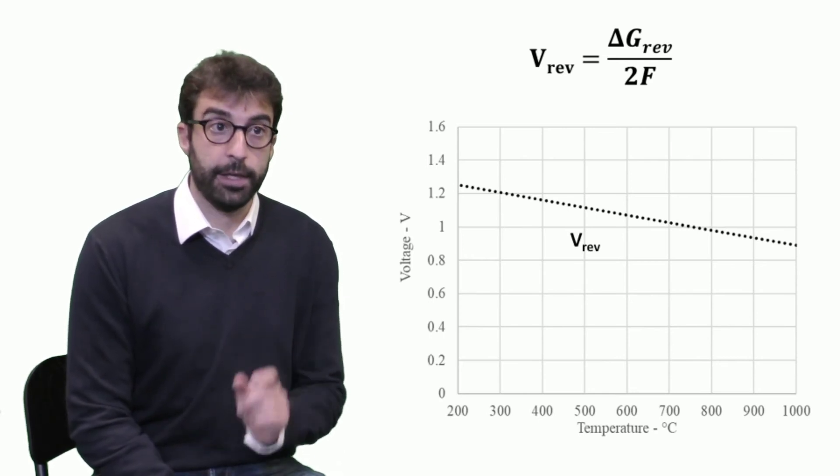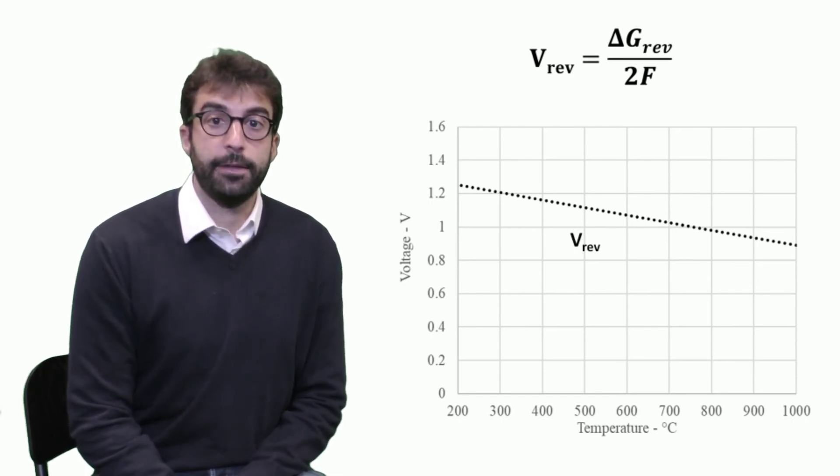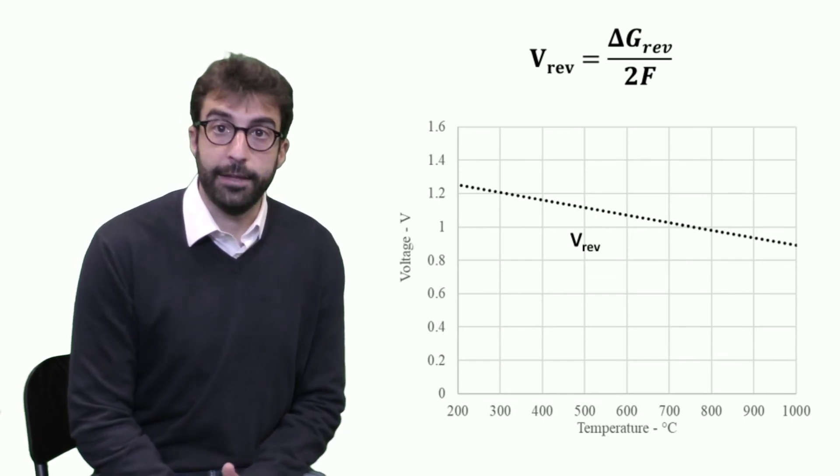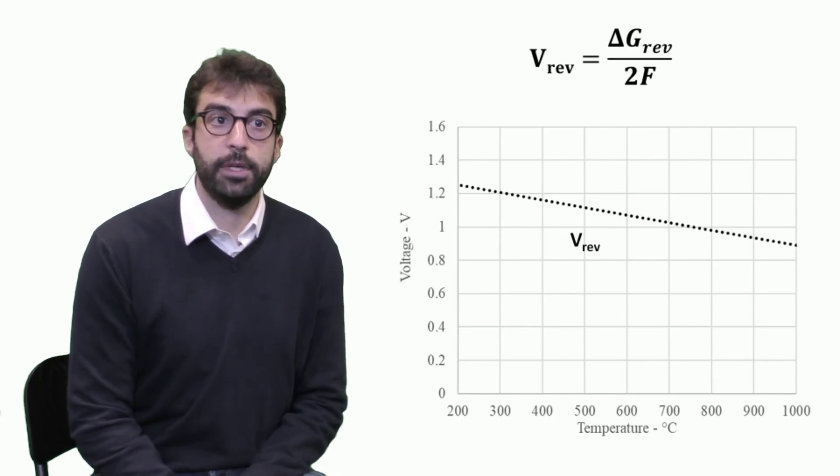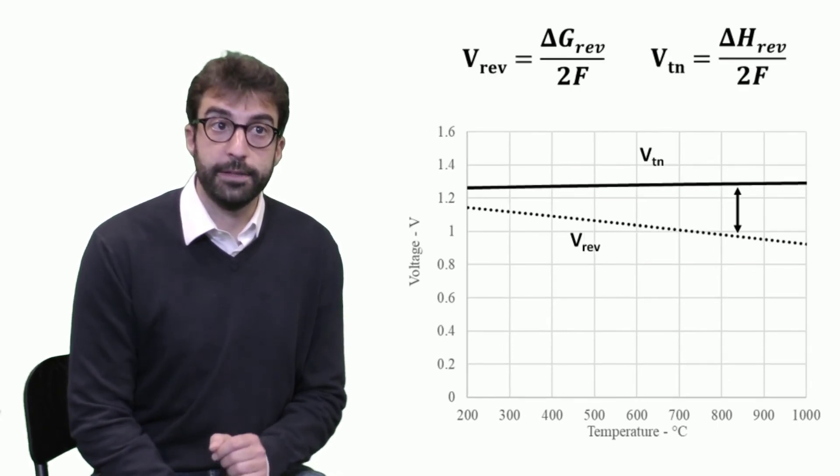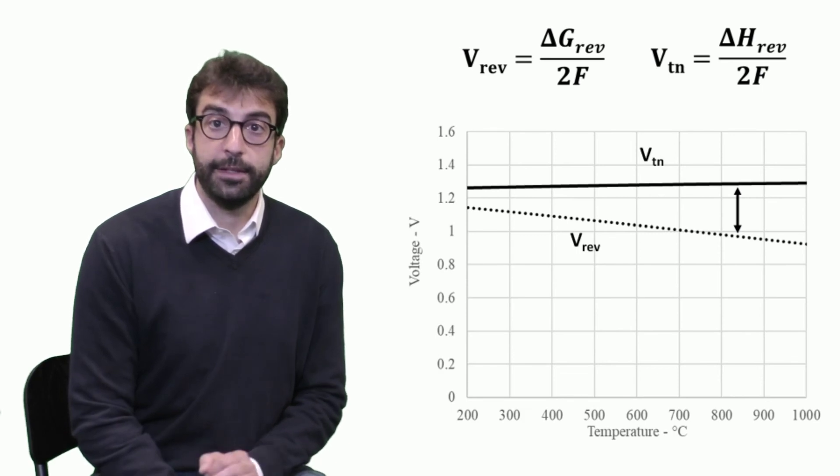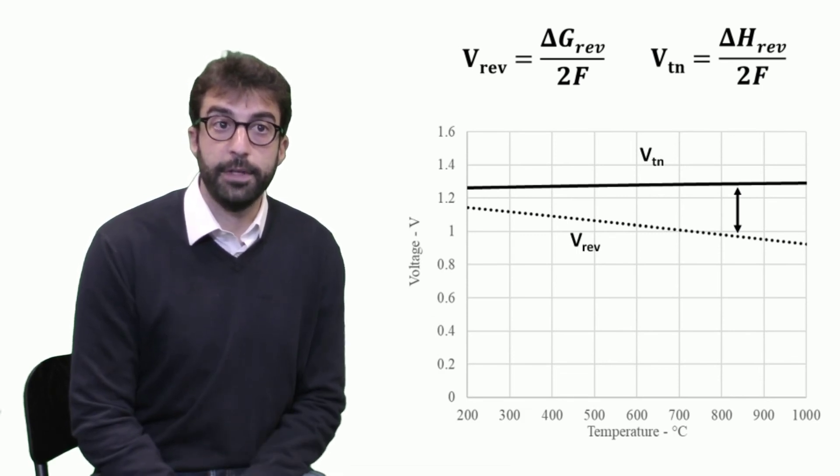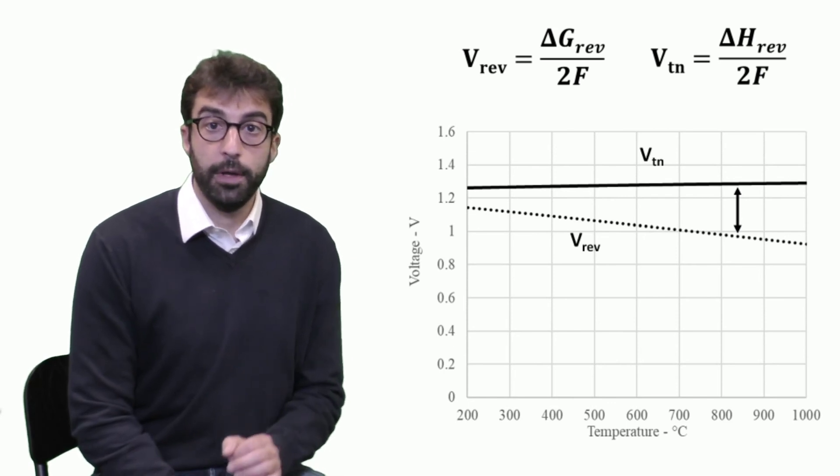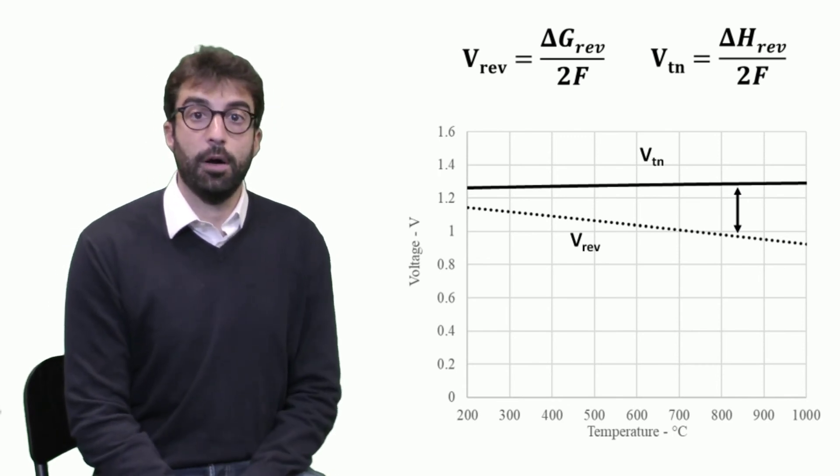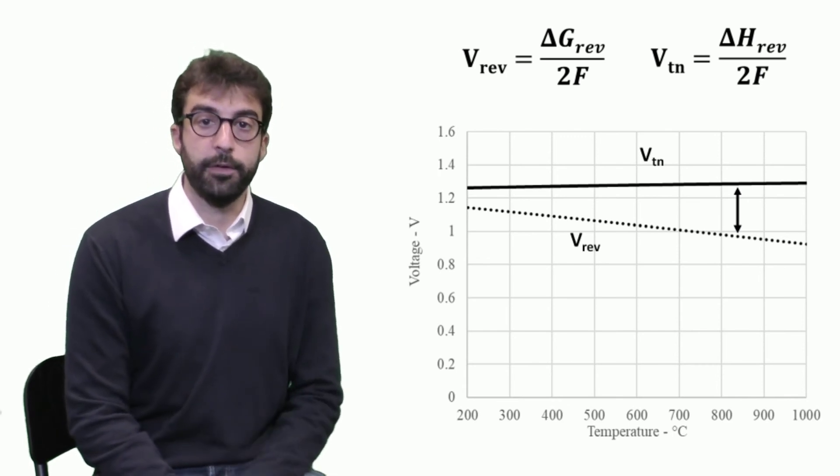So we can plot voltage like in this example as function of temperature. And we can do at the same way a similar exercise also for the total enthalpy. This is called thermoneutral voltage. We'll see in the next unit what it means, but you can see it's possible to define it the same way as the ratio between the total enthalpy difference and the two times Faraday. So we can plot both the variation as function of temperature of thermoneutral voltage and of reversible voltage.